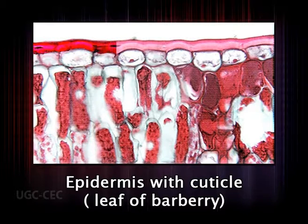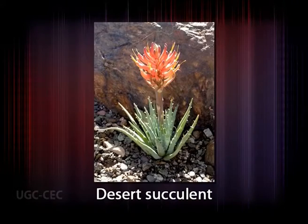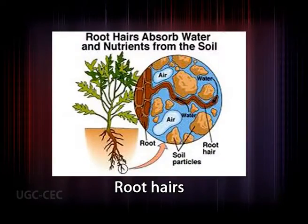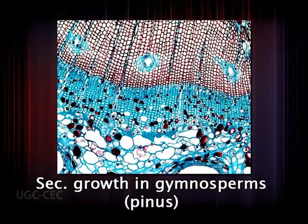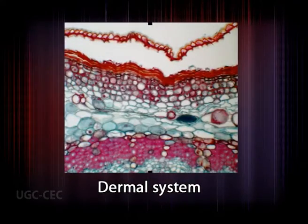The epidermis is one cell thick in most plants and forms the outer protective covering. The exposed outer walls have a fatty cuticle layer that varies in thickness depending on the species and environmental conditions. In plants such as desert succulents, a layer of wax may be added outside the cuticle. Various types of specialized cells occur on the epidermis, including guard cells, trichomes, and root hairs.